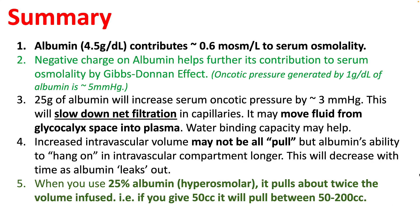In summary, a normal albumin level of 4.5 g/dL contributes only 0.6 milliosmol per litre to serum osmolality. The negative charge on albumin further increases its contribution to serum osmolality via the Gibbs-Donnell effect. 25 grams of albumin will increase serum oncotic pressure by around 3 mmHg, which will slow down net filtration and may help move fluid from the glycocalyx space into plasma. The increased intravascular volume may not be all pull, but rather albumin's ability to remain in the intravascular compartment longer than saline — and certainly this will decrease with time as albumin leaks out.